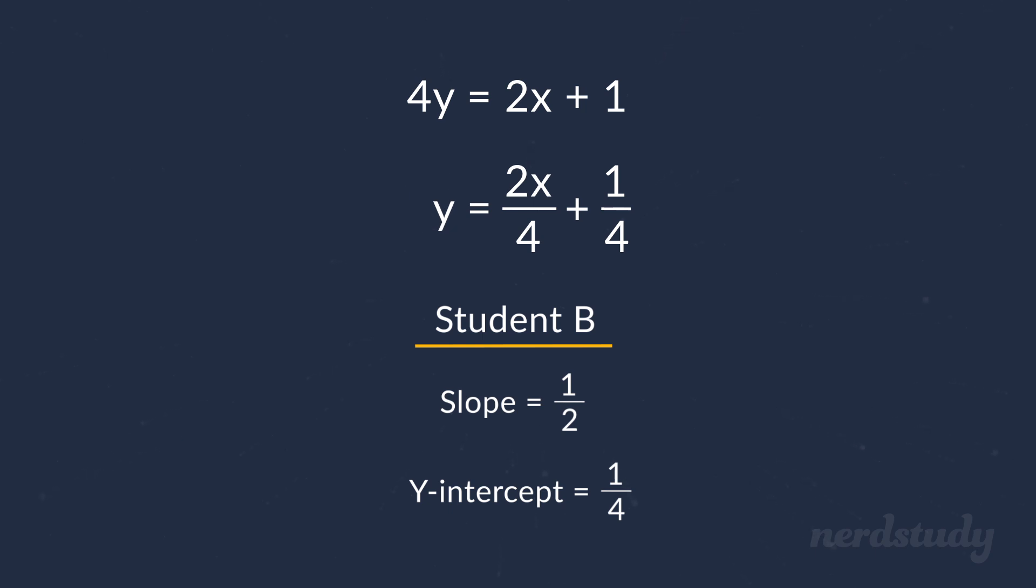Of course, now our slope would simplify down to just 1 over 2, and our y-intercept would be 1 over 4.